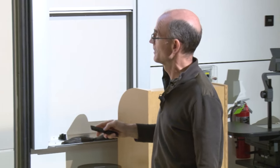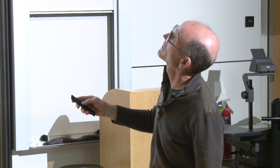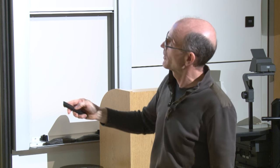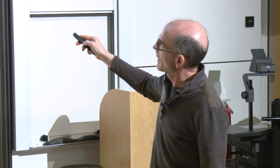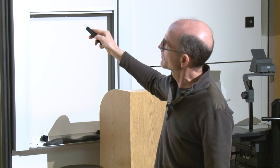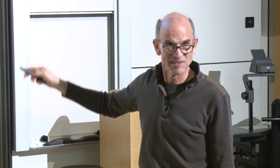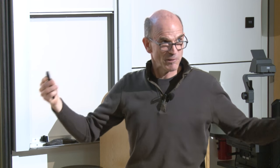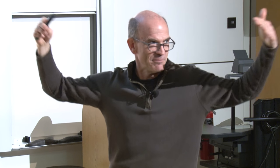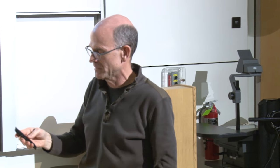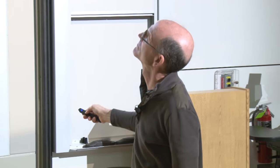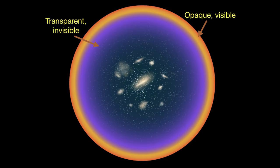Think of our view of the universe like an inside-out sun — we're in the middle, and in any direction you look out you're looking back in time. You look back to when the universe was ionized and then you see this surface — what looks like a surface, a photon surface, like an inside-out sun. That is the cosmic microwave background — what Penzias and Wilson discovered.